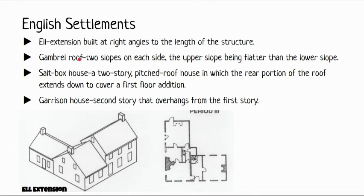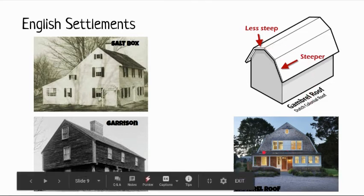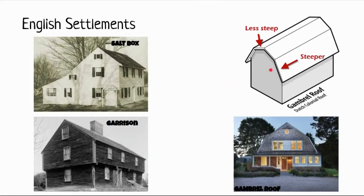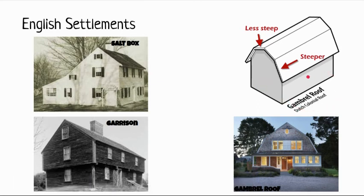The gambrel roof features two slopes on each side, the upper slope being flatter than the lower slope. Think of the old red barns with white doors — that's essentially this roof style. It's fairly flat on top, then drops steeply below. It can be designed with a barn-type influence without being too country-themed, and depending on where the front door is placed, it can look either boxy or more open.